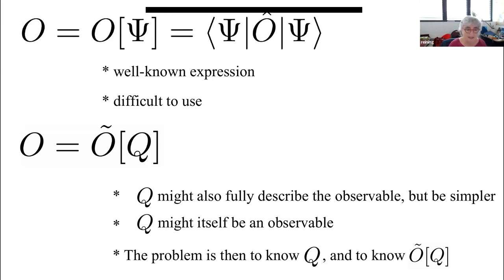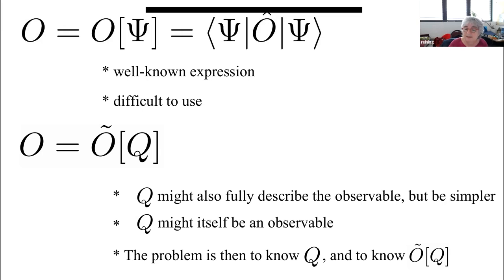Q could be anything — it could itself also be an observable, for example. Then you have a double problem: you have to know this Q, and you have to know how your observable depends on Q. This means you have to know the functional O of Q.